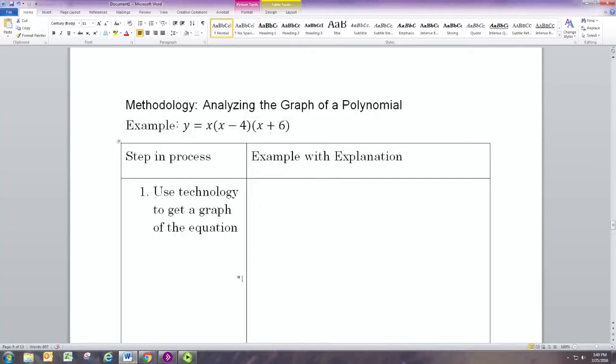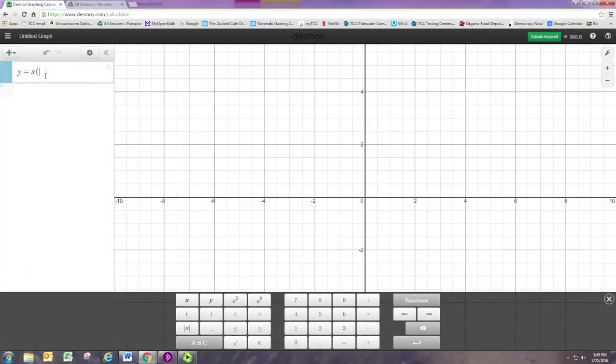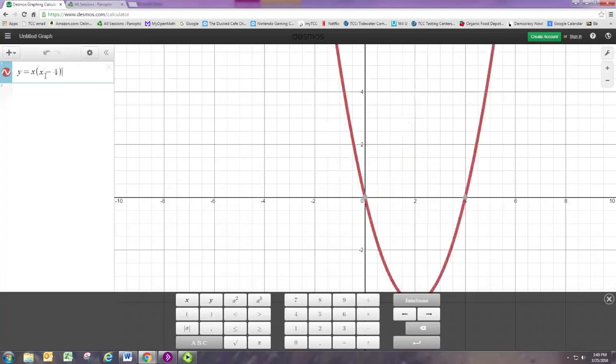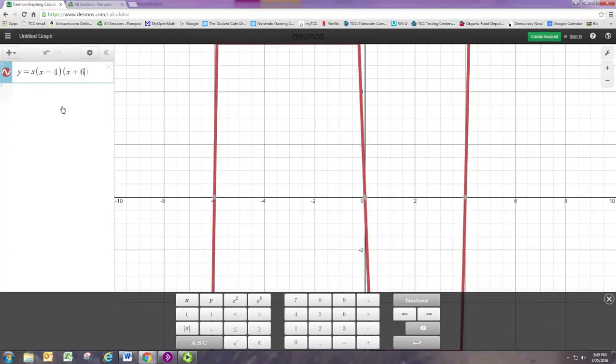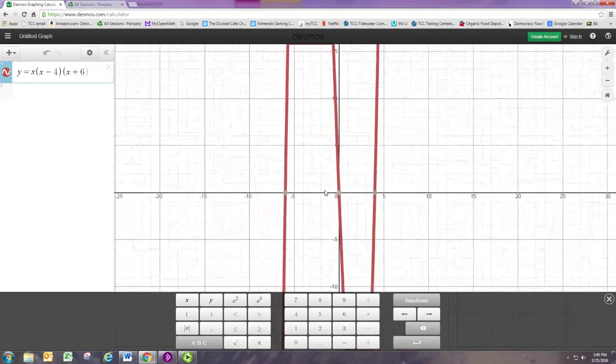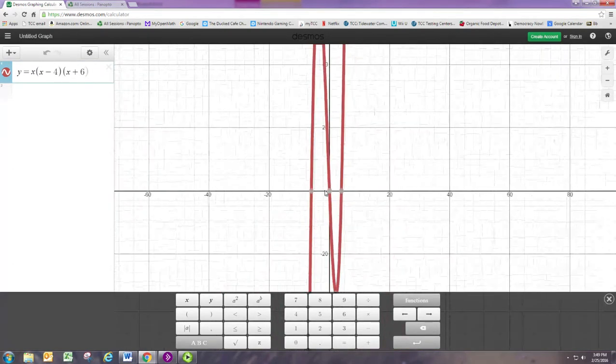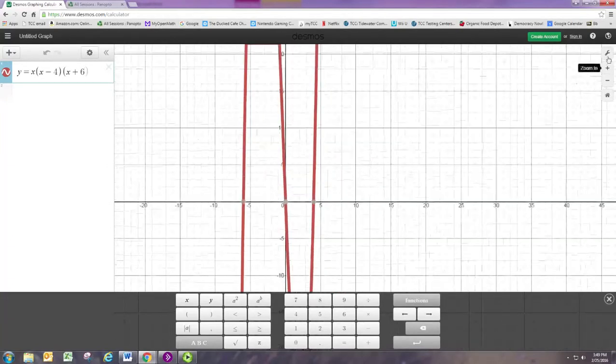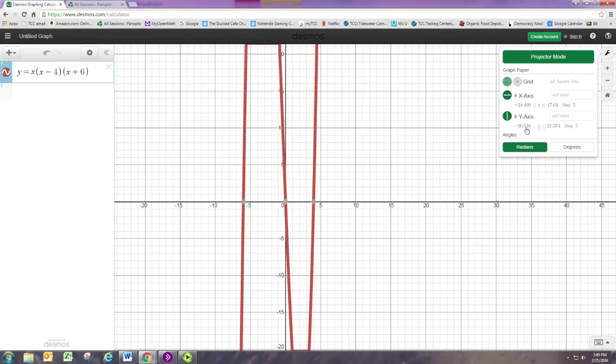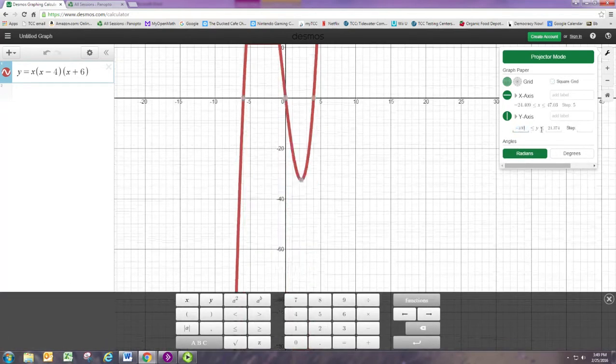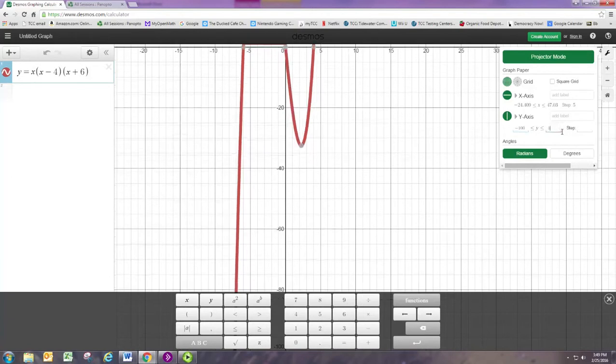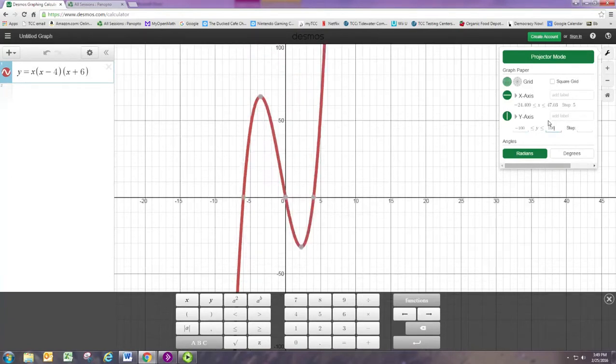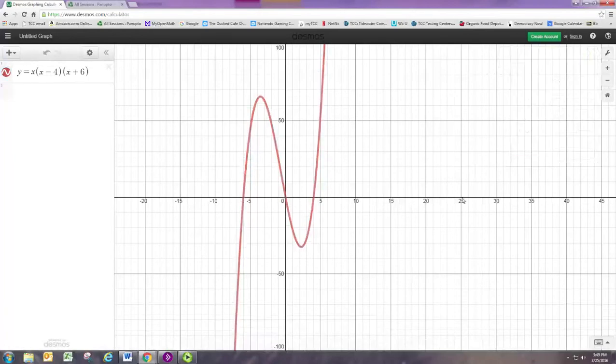We start with this one: y equals x times (x minus 4) times (x plus 6). I'm just going to use Desmos to graph this. You can see we need to zoom out to get a nice picture. We need to zoom out on the y-axis.